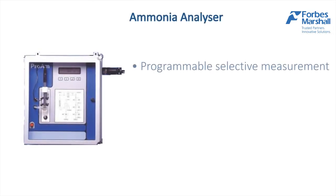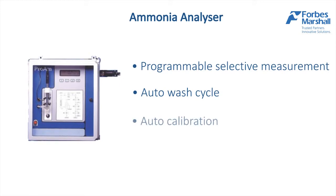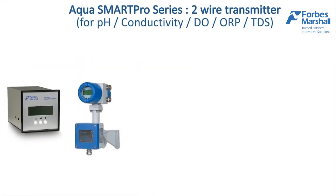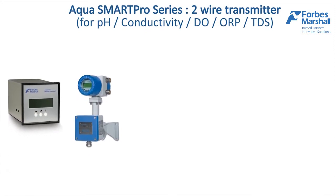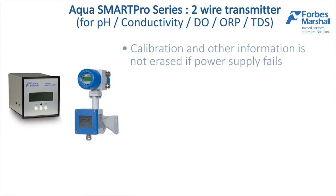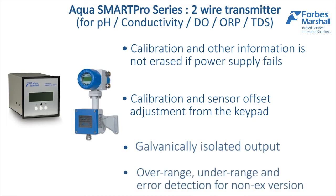The ammonia analyzer provides a specific measurement with an auto wash cycle, auto calibration, and continuous or batch type measurements. The AquaSmart Pro Series two-wire transmitter supports pH, conductivity, dissolved oxygen, ORP, and TDS. Calibration and other information is not erased if the power supply fails, and sensor offset adjustment can be done from the keypad. The output is galvanically isolated with over-range, under-range and error detection.